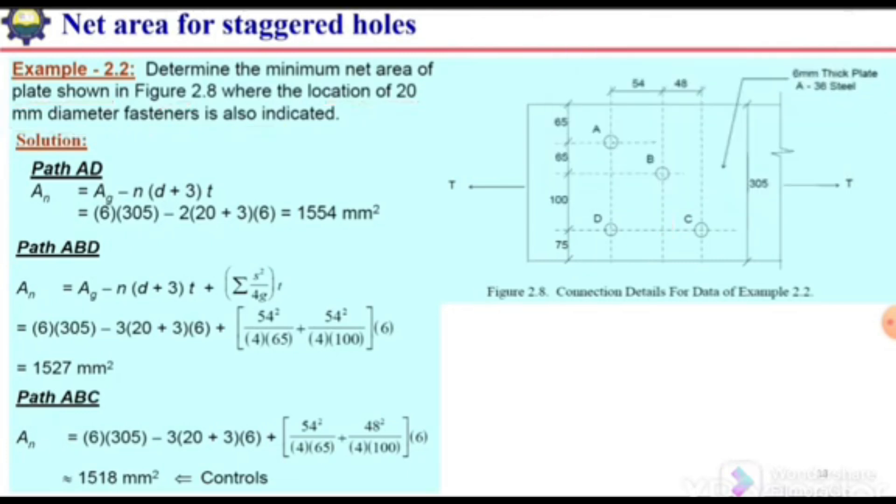We need to investigate how many different paths are possible in this case. The first critical path will be from A to D, the second may be A-B-D, and the third might be A-B-C. So these three paths are possible.